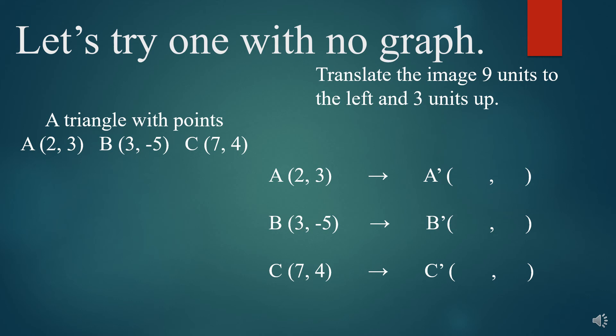So we have our three original points, A, B, and C, and so each of the X and Y are going to make some changes. So let's look at the X's first. We are going to do 9 units to the left, so that means we're going to be subtracting 9. So 2 minus 9 is negative 7, 3 minus 9 is negative 6, and 7 minus 9 is negative 2.